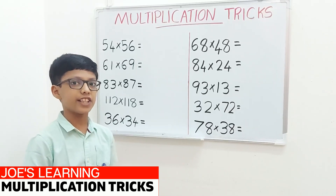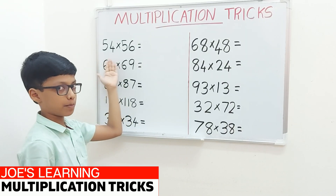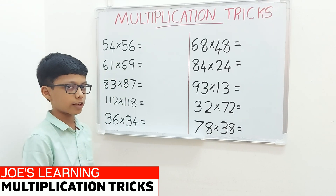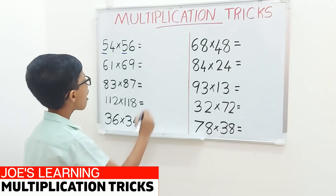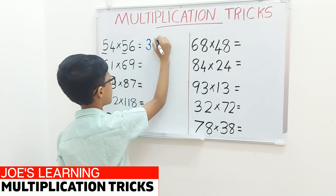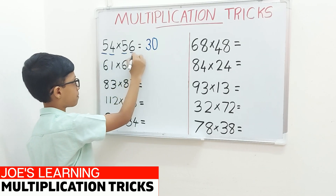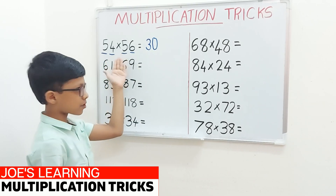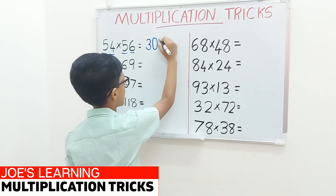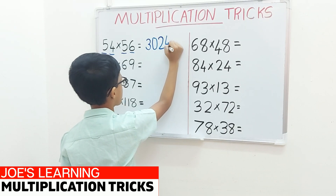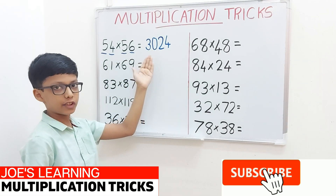So now I will explain it in detail with some examples. My first example is 54 multiplied by 56. To find the product of these two numbers, we should multiply 5 with its next number 6. 5 multiplied by 6 is 30. So write it down as the first two digits of your answer. Now to find the next two digits we should multiply the digits in the ones place, 4 and 6. So 4 multiplied by 6 is 24. Write it down as your last two digits. So 54 multiplied by 56 equals 3024.